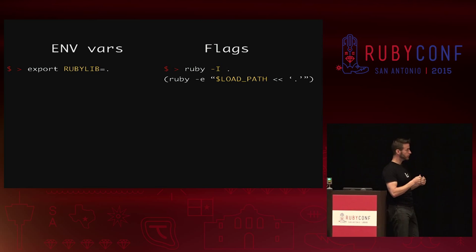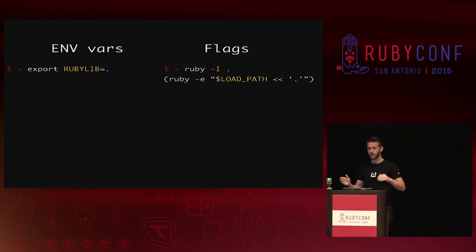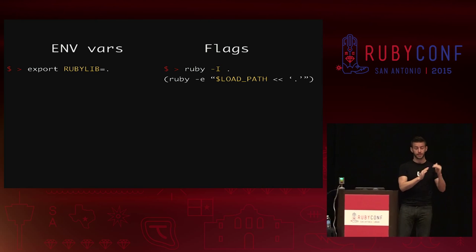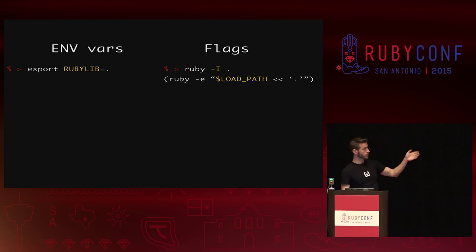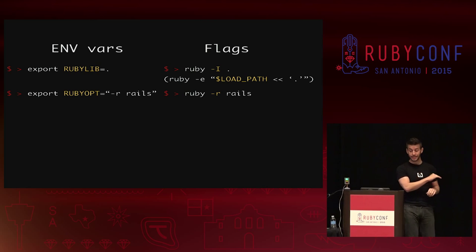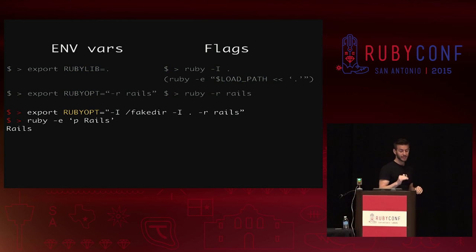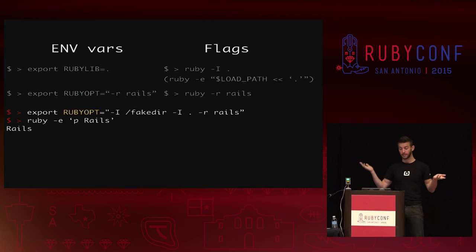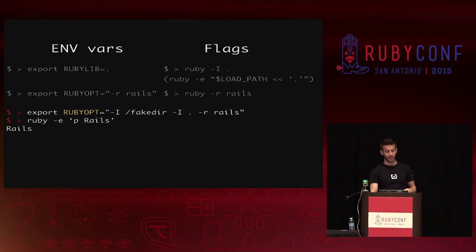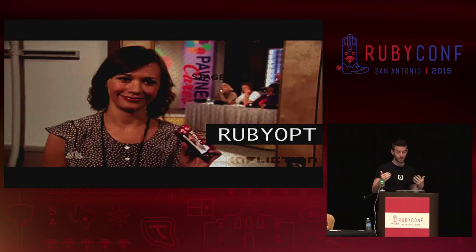Just to be clear on the relationship between environment variables and command-line flags: RUBYLIB is the load path, and so is -I, and so is $LOAD_PATH in Ruby. RUBYOPT set to '-r rails' is the exact same as calling 'ruby -r rails'. And RUBYOPT with '-i fake_dir -i something_else -r something' will totally work — RUBYOPT is a great way to configure — or completely surprise someone with — Ruby's behavior.